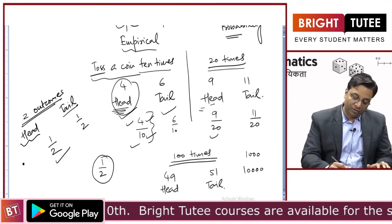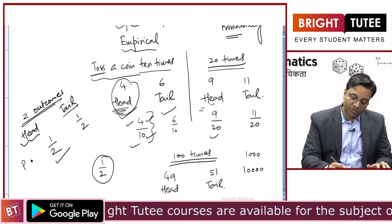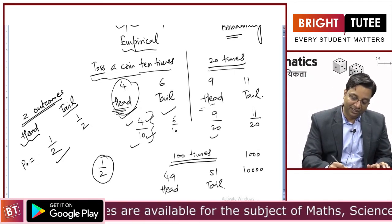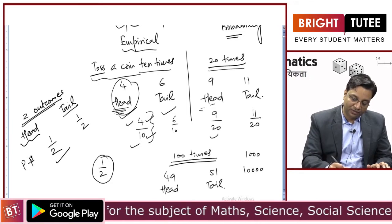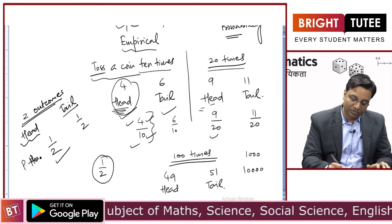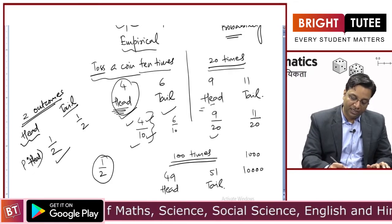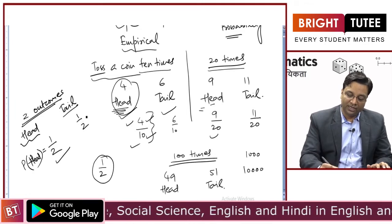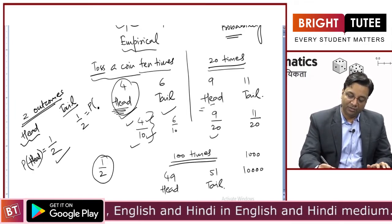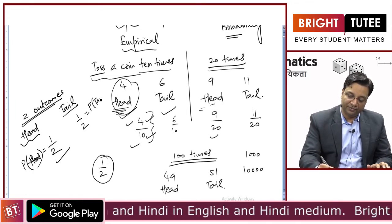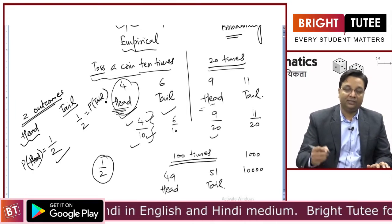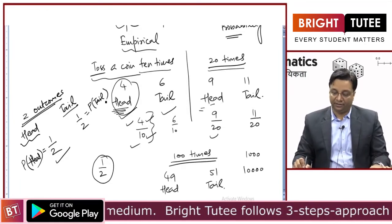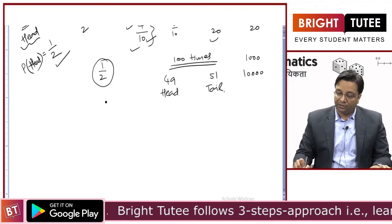This is what we call probability. So probability of head is 1/2 and probability of tail is 1/2.